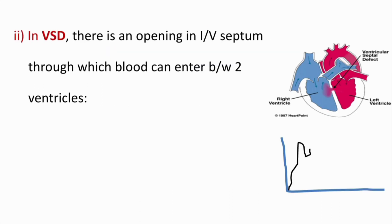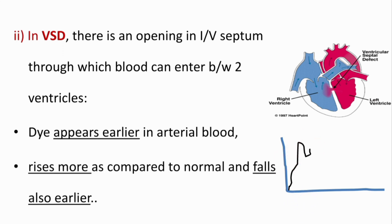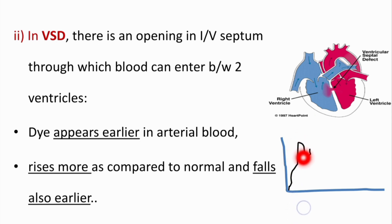Another condition detectable by this method is VSD — ventricular septal defect — in which there is an opening in the interventricular septum allowing blood to pass between the two ventricles. In VSD, the dye concentration-time graph shows that the dye appears earlier in arterial blood, rises more steeply, and also falls earlier compared to the normal graph.